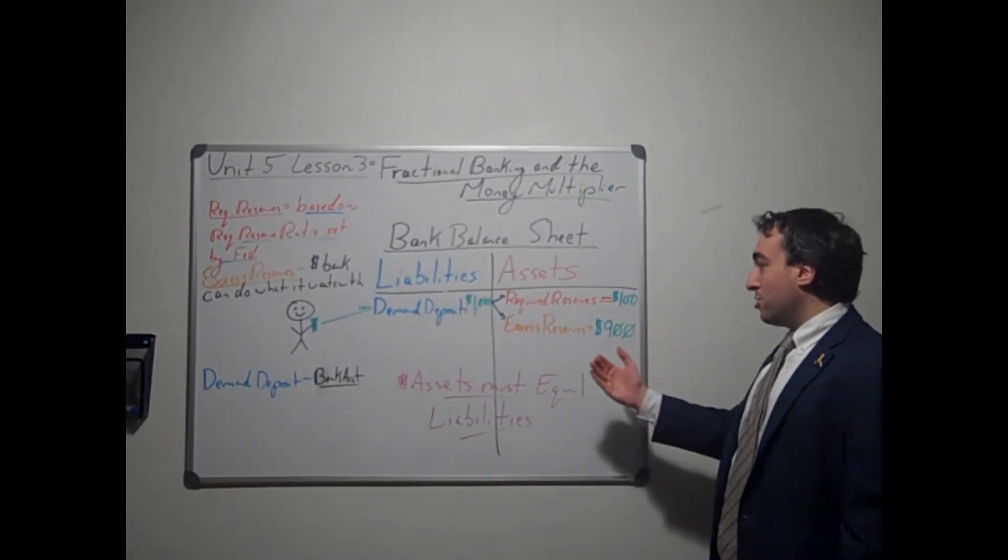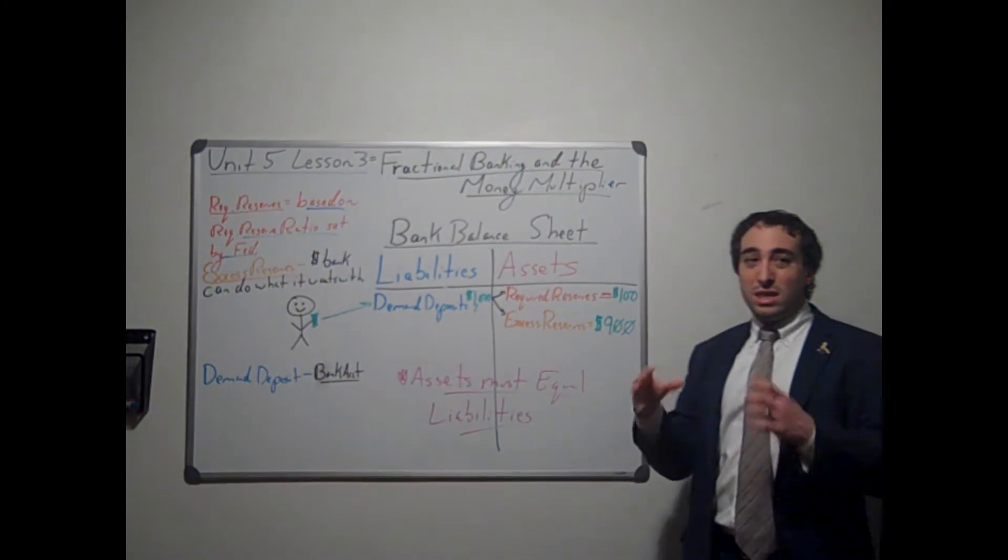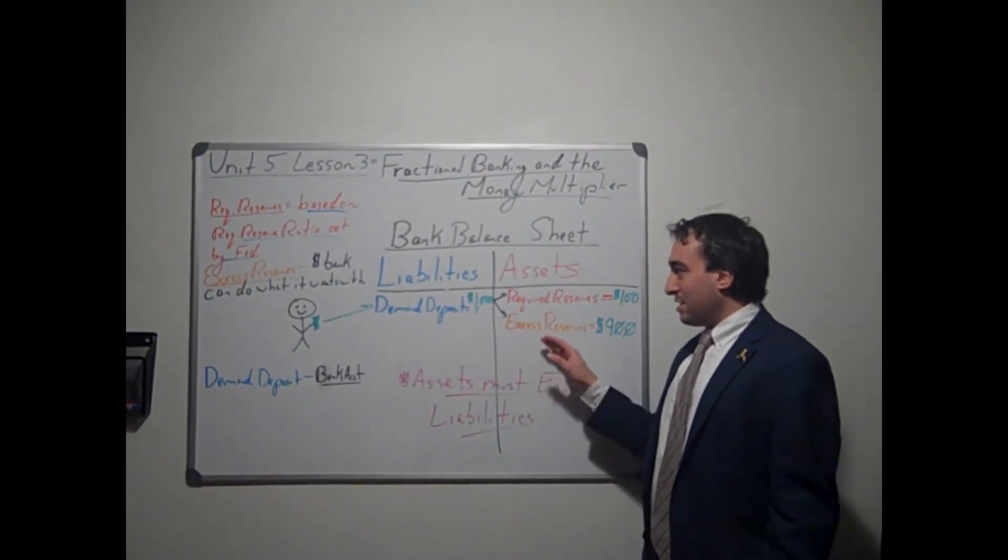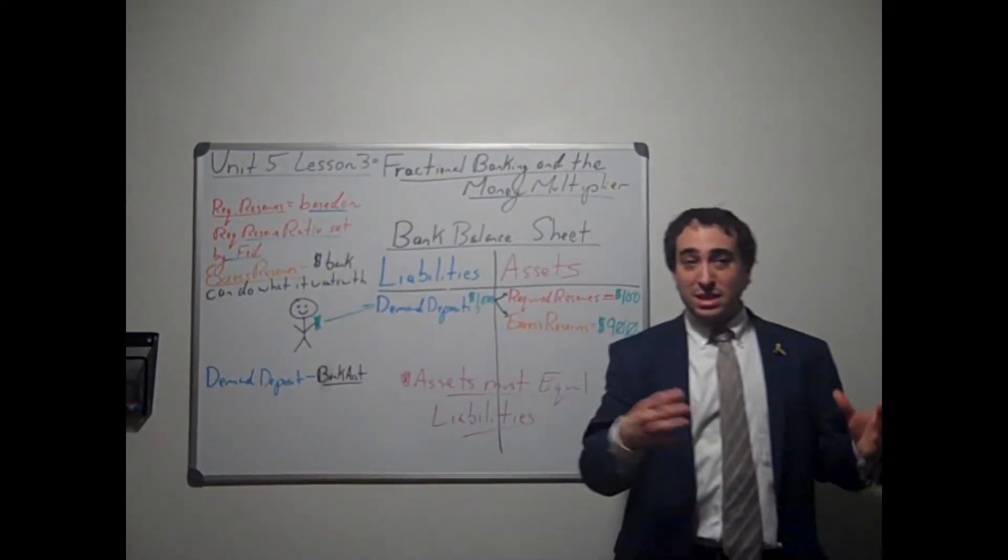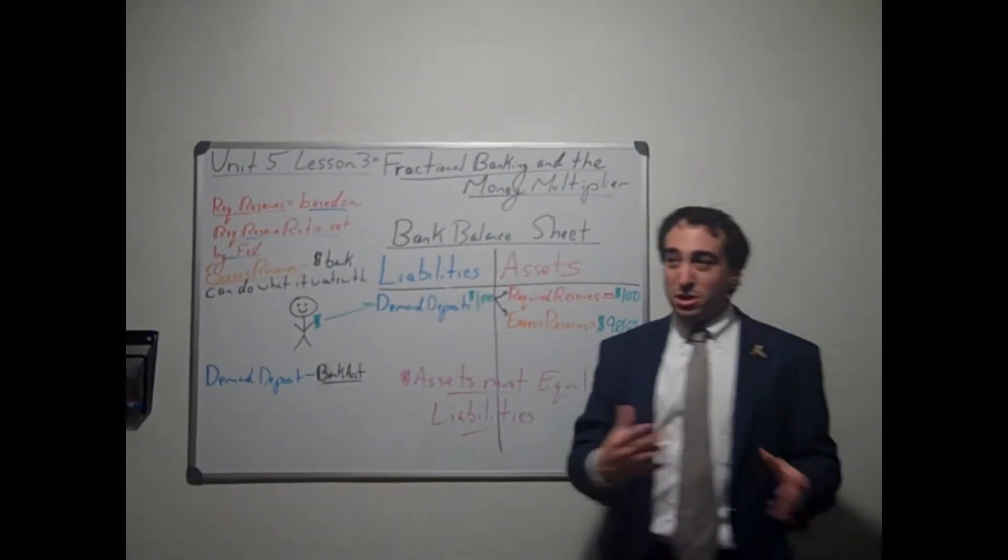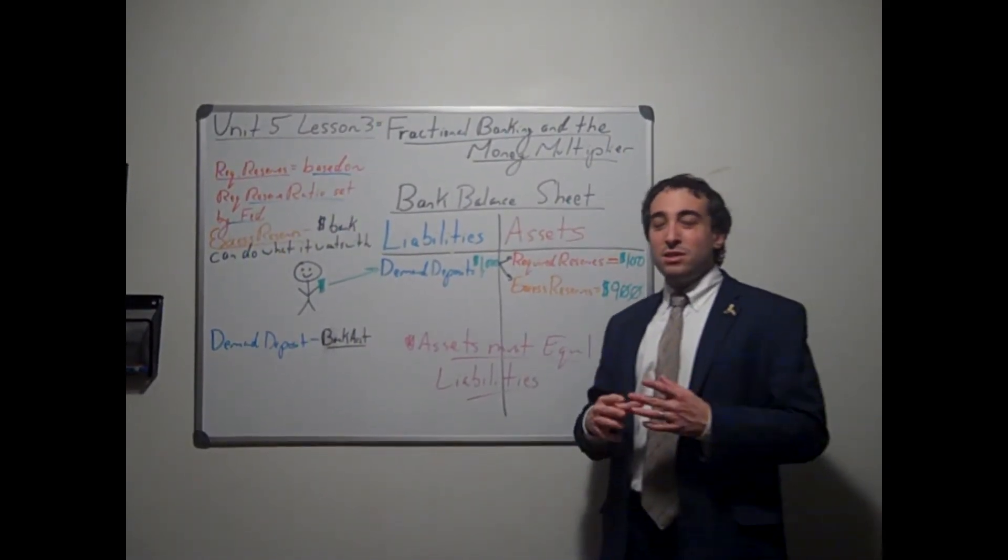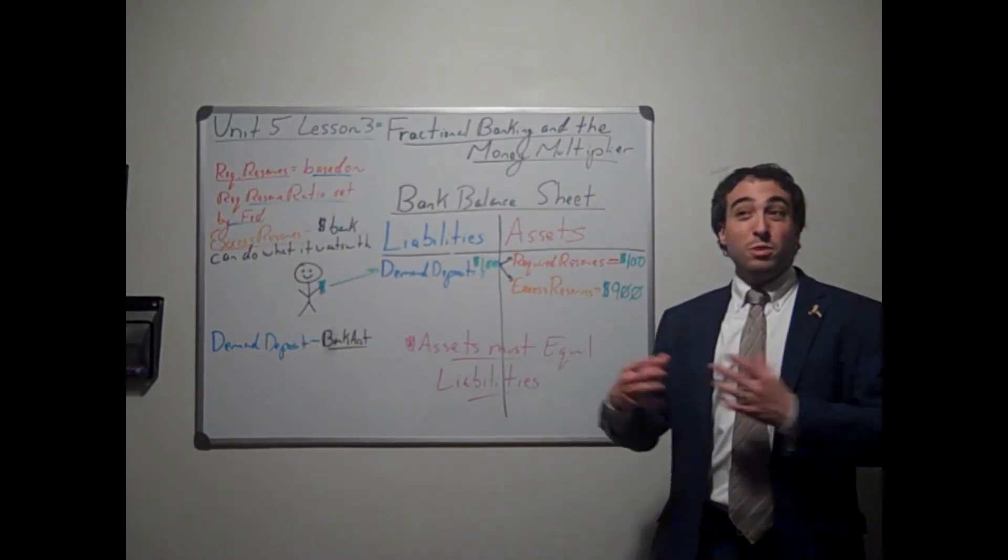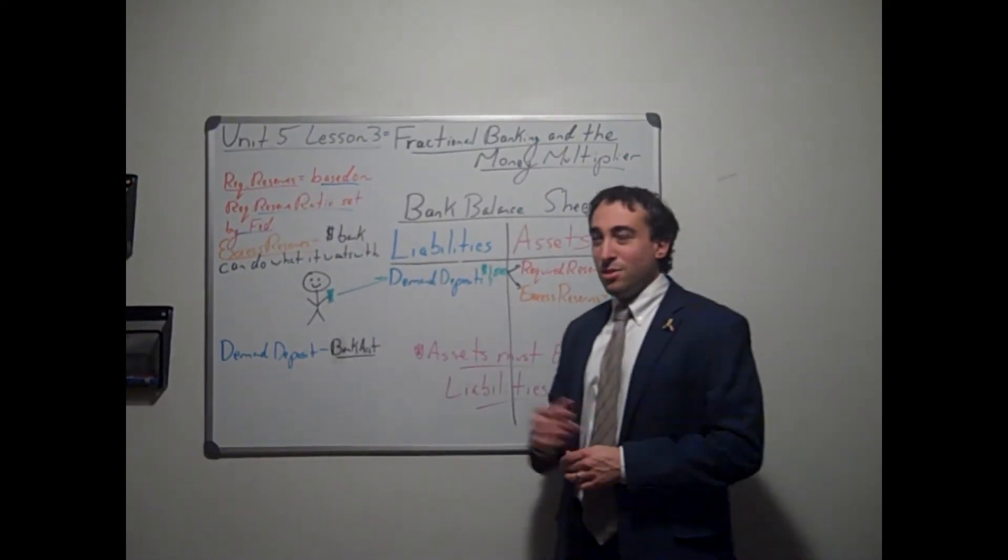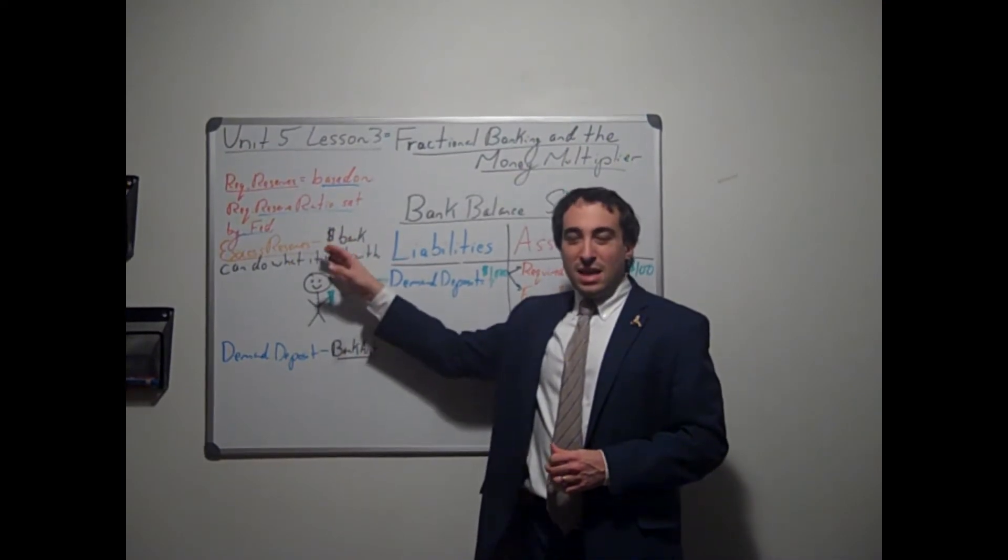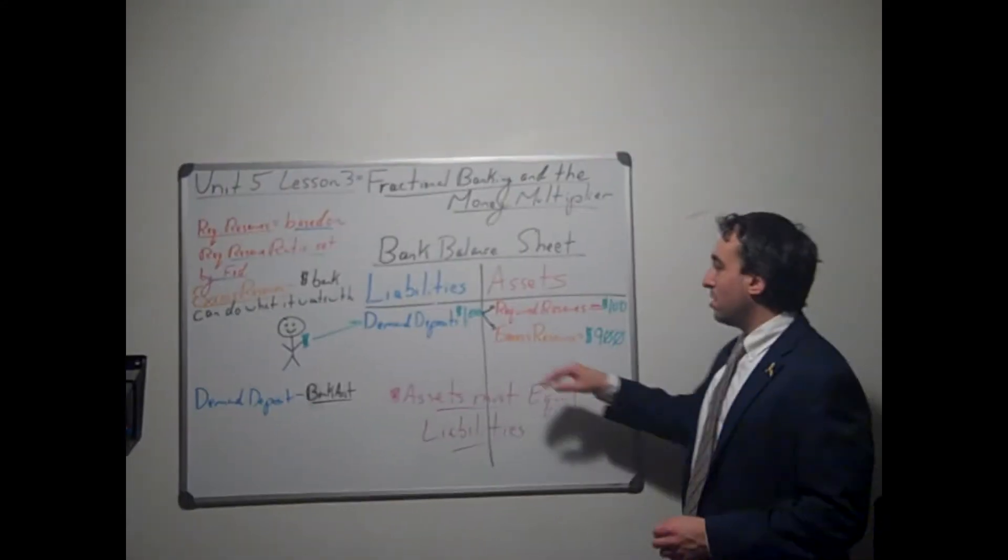Since the current required reserve ratio is 10%, let's use 10% for this example. So that means when he deposits $1,000 into the bank, $1,000 goes to the demand deposits, and $100 must immediately go to required reserves. Where does that other $900 go to? That goes to the bank's excess reserves, and these are the bank's assets, what the bank owns. And excess reserves really just means money the bank can do what it wants with. It can hold on to the money as cash, keep it there as available cash, because people are always going to come into and out of the bank withdrawing from their demand deposits.